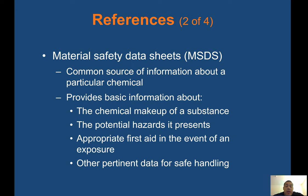Material Safety Data Sheets, or MSDS: a common source of information about a particular chemical. Provides basic information about the chemical makeup of a substance, potential hazards it presents, appropriate first aid in the event of exposure, and other pertinent data for safe handling. Any time you are transporting some type of chemical, the driver of the vehicle will have an MSDS — it tells you what the substance is, how much is being carried, and other information regarding the substance.